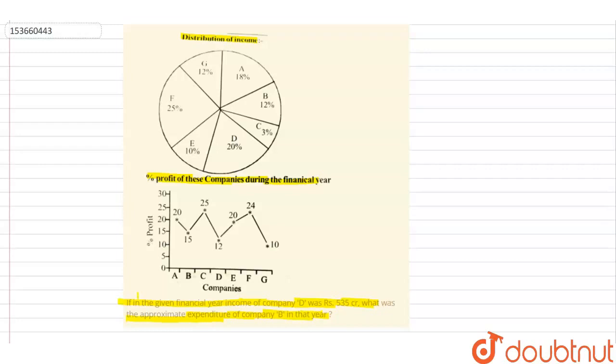So guys, please make a note of one thing. Income is always equal to profit plus expenditure. Here in the pie chart, we have been given the distribution of the income.